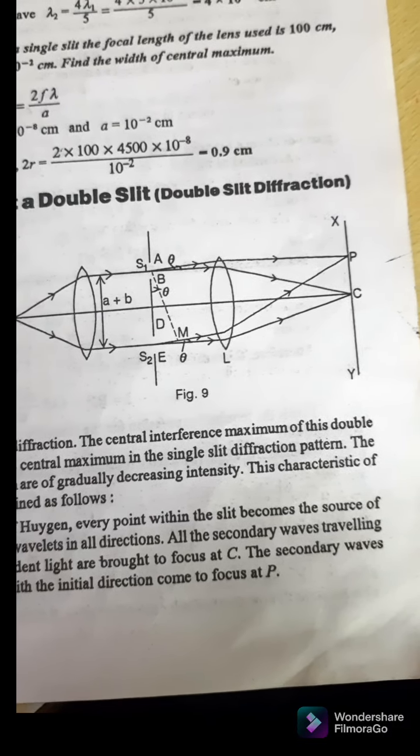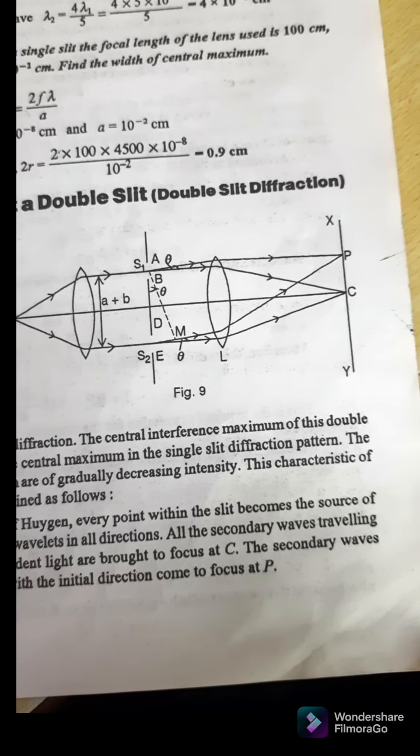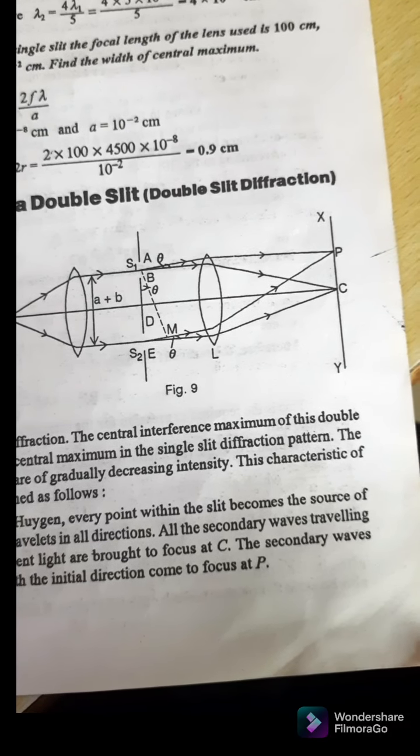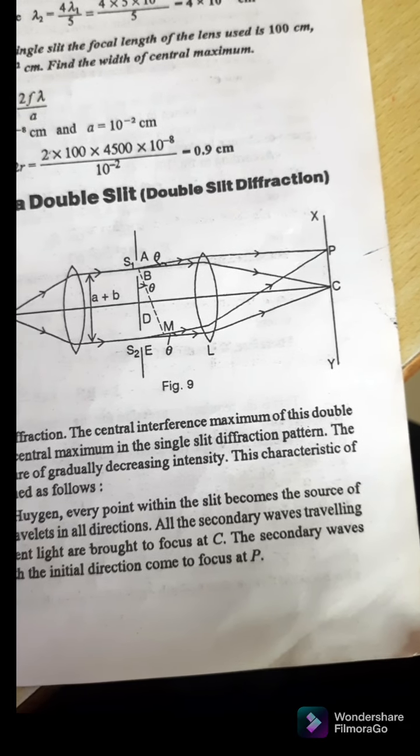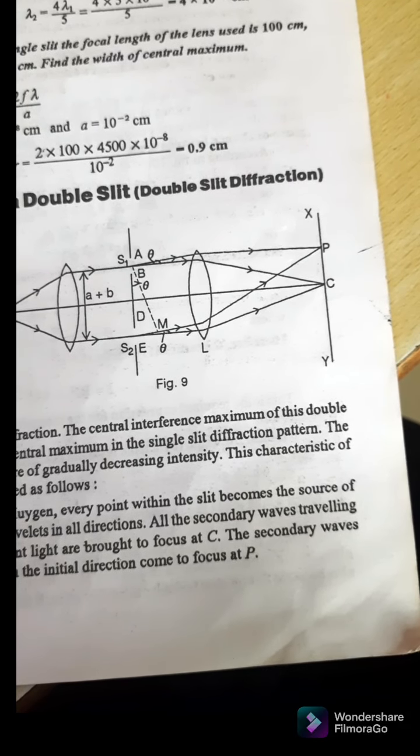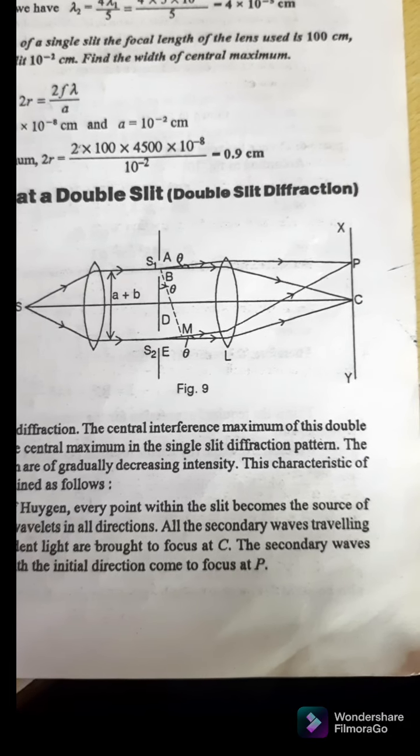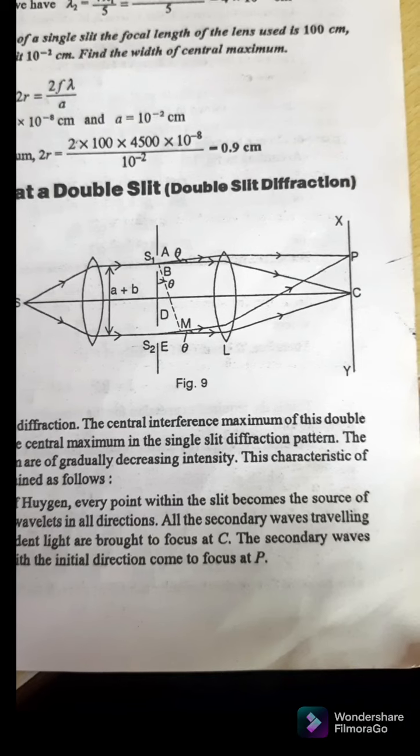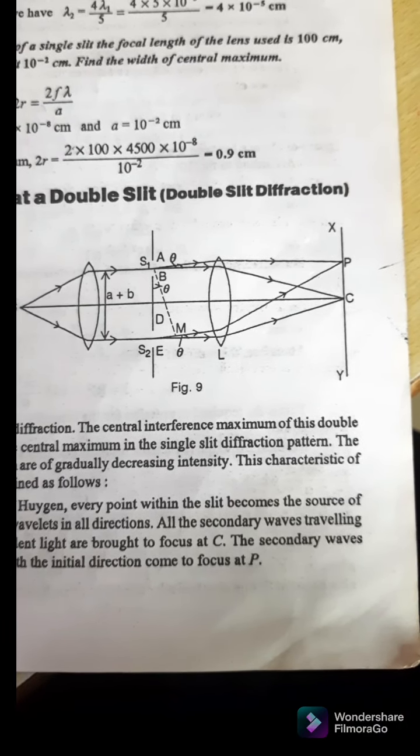Here we suppose there are two parallel slits AB and CD, each of width A, separated by an opaque section B. Let the plane wave front of monochromatic light of wavelength lambda be incident normally upon the slits. The light diffracted by the slits is focused by a convex lens L on the screen XY.